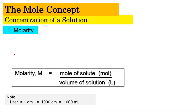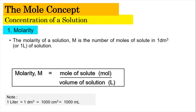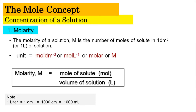For molarity, molarity is basically the number of moles of a solute in one dm³ of a solution. One dm³ is also referred to as one liter. Because of that, the unit of molarity is mol per liter or mol per dm³, or you can call it molar, using a capital letter M. Note that one liter equals one dm³, which also equals 1000 cm³ and 1000 mL — these are interchangeable.